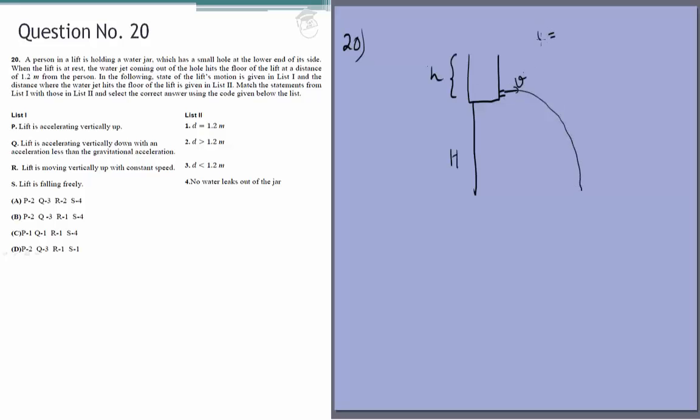We know what the velocity of efflux is: v is root of 2gh. And how much time will it take to fall here? The vertical velocity initially is 0, so H equals half gt squared, which means t equals root of 2 capital H by g.